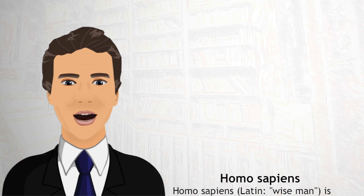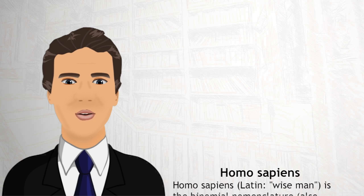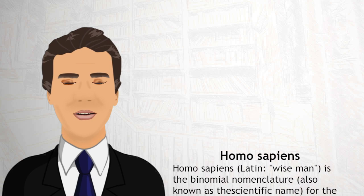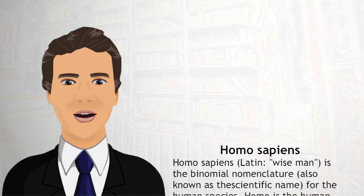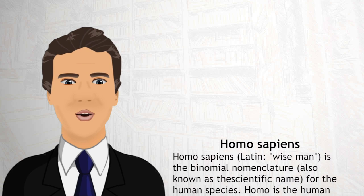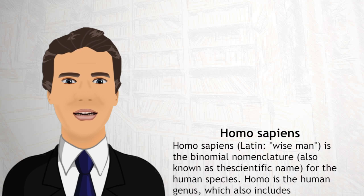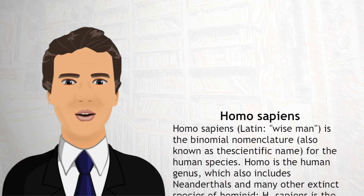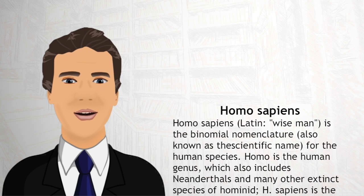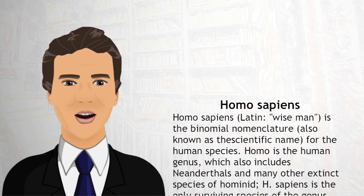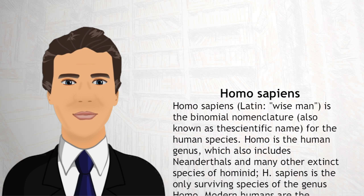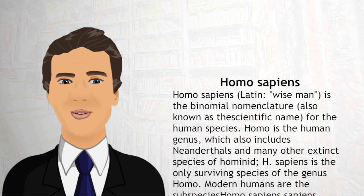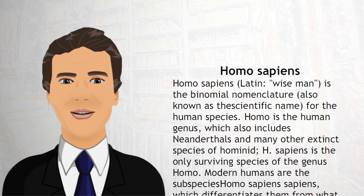Homo sapiens is the binomial nomenclature, also known as the scientific name for the human species. Homo is the human genus, which also includes Neanderthals and many other extinct species of hominid. H. sapiens is the only surviving species of the genus Homo.